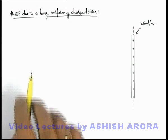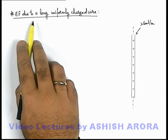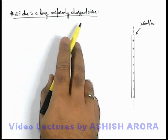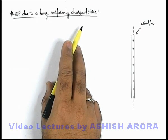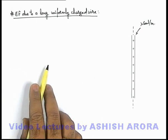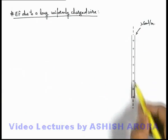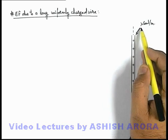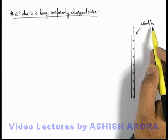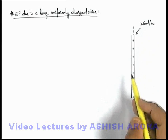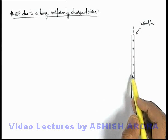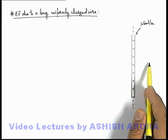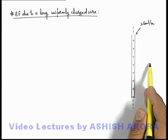Now let's find out the electric field due to a long uniformly charged wire by using Gauss's theorem. This is a very long uniformly charged wire charged with a linear charge density lambda coulombs per meter. From this wire, at some radial distance, we are required to find the electric field at the point.